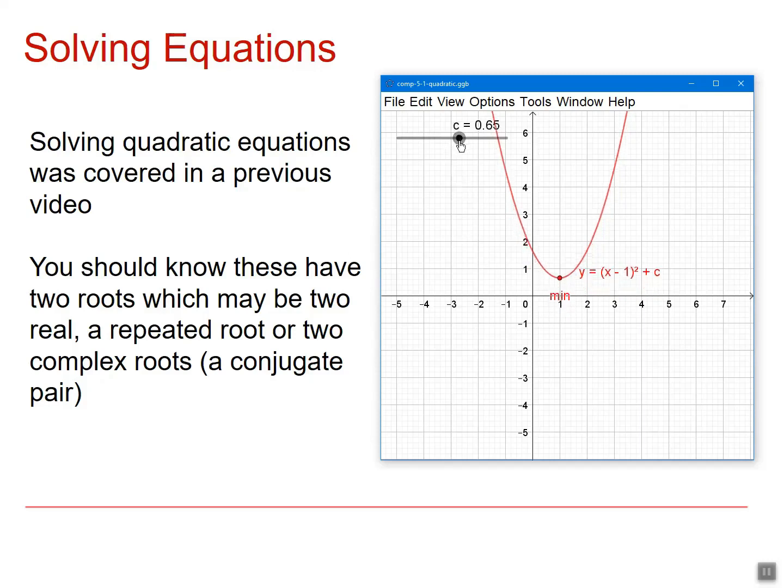Or they may both be complex roots, and if they are complex roots, they occur in a conjugate pair. So in this situation, the quadratic does not cut the axis, so we get two complex roots.